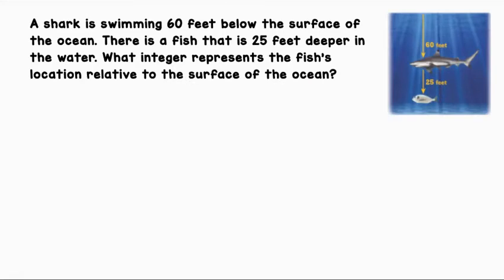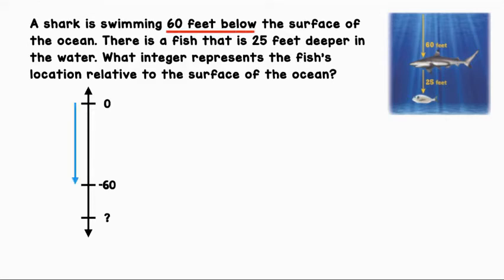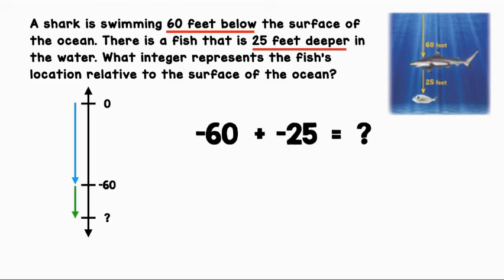A shark is swimming 60 feet below the surface of the ocean. There is a fish that is 25 feet deeper in the water. What integer represents the fish's location relative to the surface of the ocean? Let's represent this on a vertical number line. The shark is 60 feet below, so we can represent that with negative 60. The fish is 25 feet deeper, so we can add negative 25. That will give us the location of the fish.